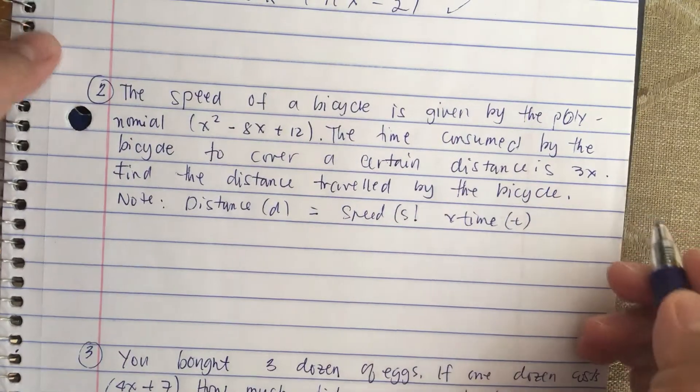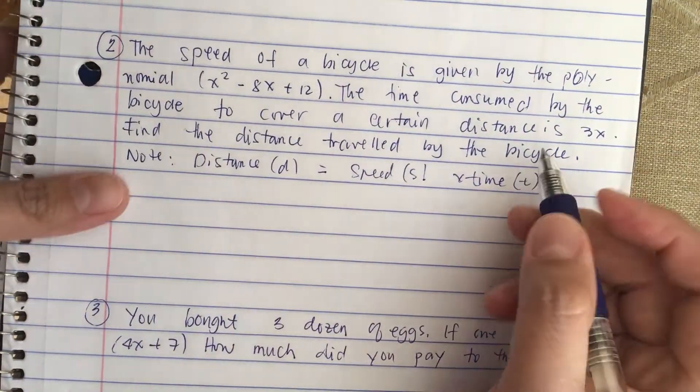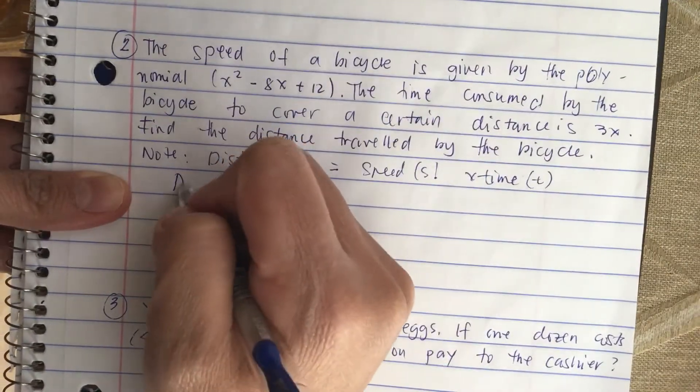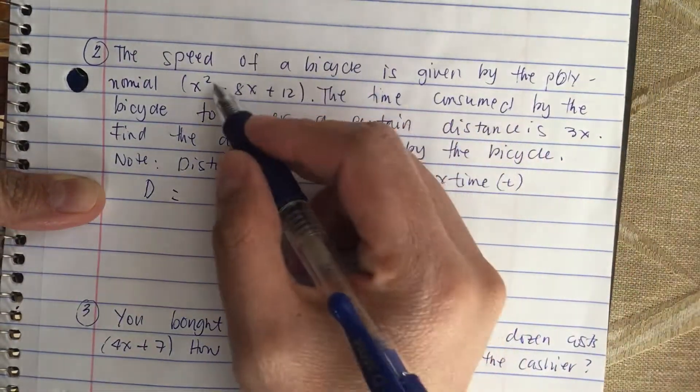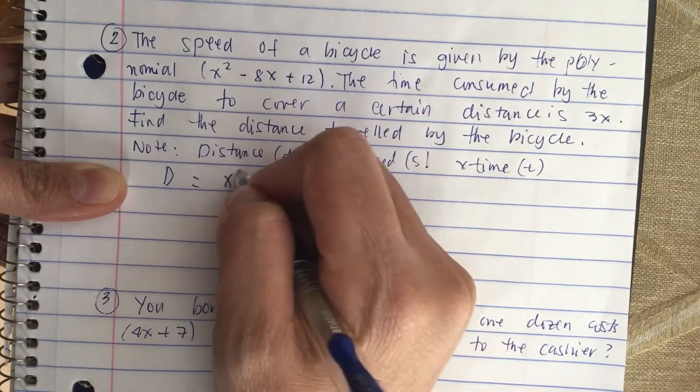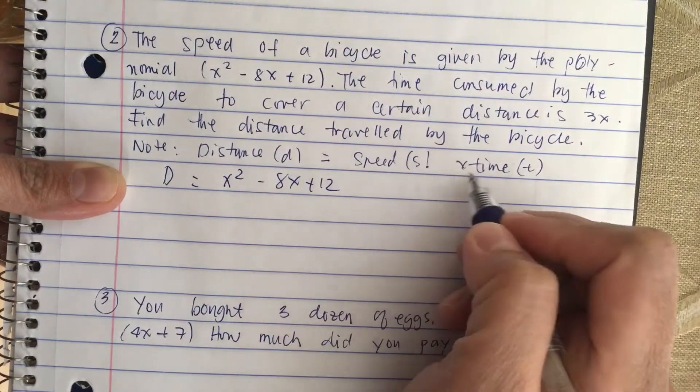Note, distance is equal to speed times time. So the distance d is equal to the speed, which is x squared minus 8x plus 12, now we multiply by the time.